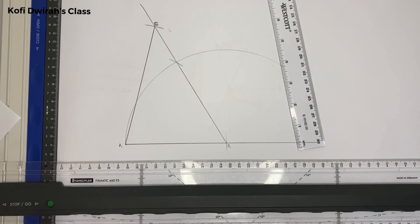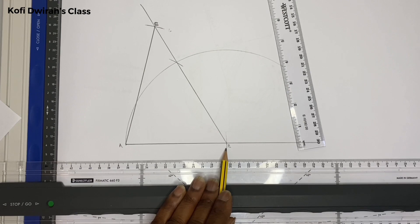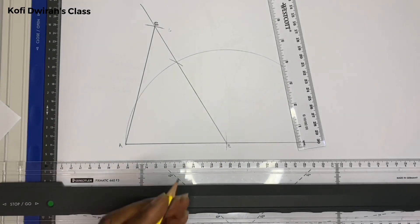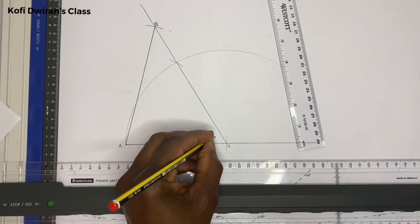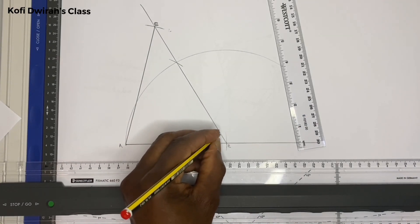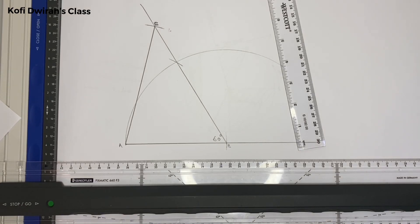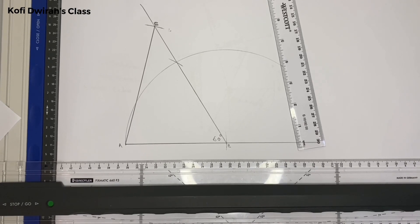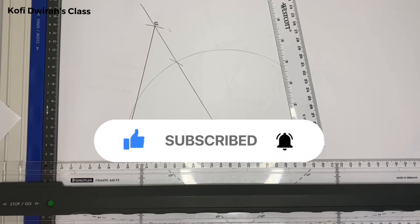So we have line AB at 11 centimeters, angle ABC at 60 degrees, and line AC which is 14 centimeters — from here to here is 14 centimeters. This is how to construct a triangle giving two sides and one angle. Thank you very much for watching this video.